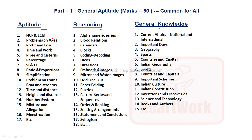From aptitude you can expect topics like HCF and LCM, ages, profit and loss, work and time, percentage, ratio problems, and problems on trains. From reasoning, topics like blood relationships, coding-decoding, directions, and paper folding will come. From general knowledge, questions will come from current affairs — national and international current affairs.